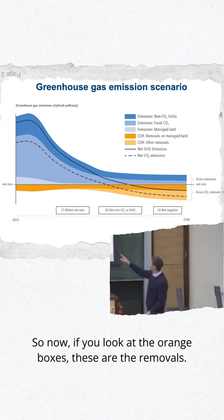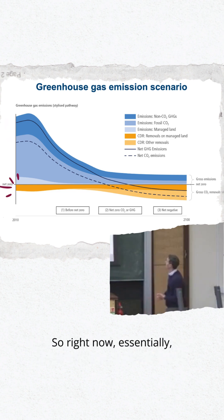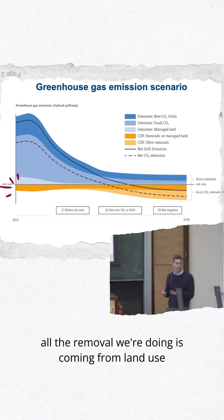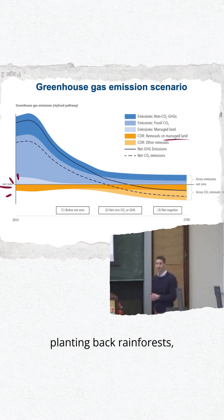So now if you look at the orange boxes, these are the removals. Right now, essentially all of the removal we're doing is coming from land use changes. You can think reforestation, planting back rainforests and the like.